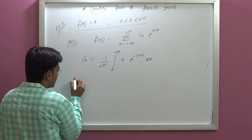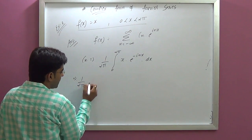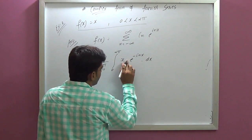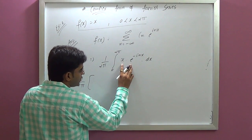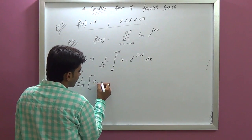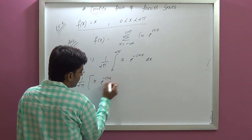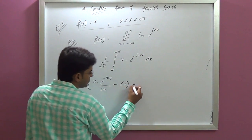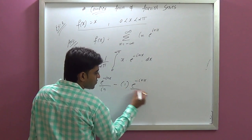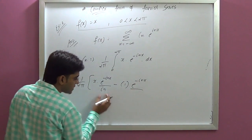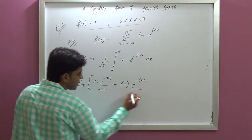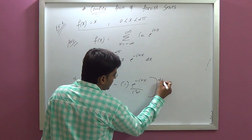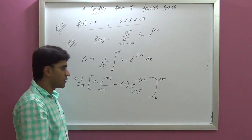Now, after applying the integration by parts theorem, we get 1 upon 2π times the integration result: x times e raised to minus inx upon minus in, minus e raised to minus inx upon minus in, into minus in — that means i squared n squared — with limits 0 to 2π.